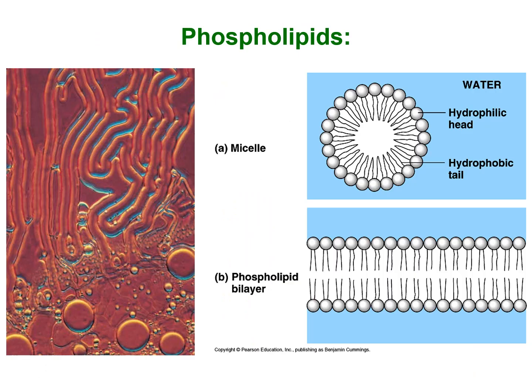When you take phospholipids and throw them in water they form a stable configuration. The easiest thing is to simply form spheres with hydrophilic heads around the outside and hydrophobic tails on the inside. But if you put phospholipids in a thin layer on top of a water bath and shake it, you can actually get them to form a phospholipid bilayer. This is something that's been known for well over 100 years.